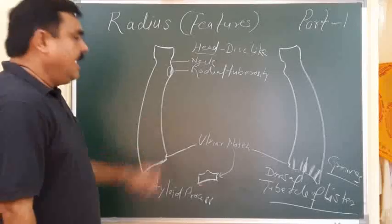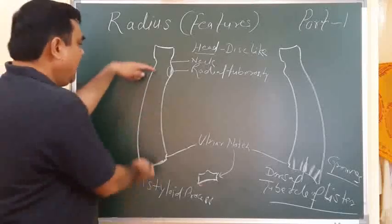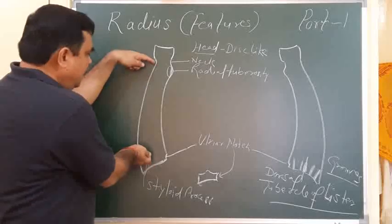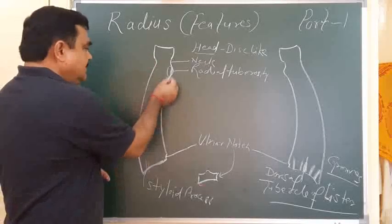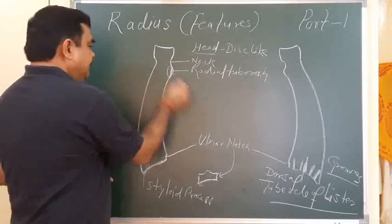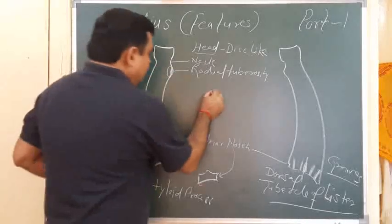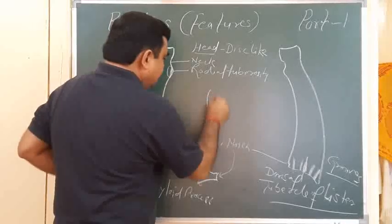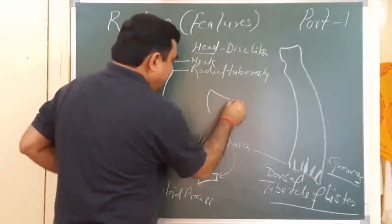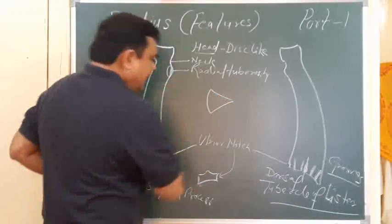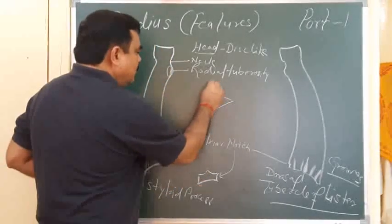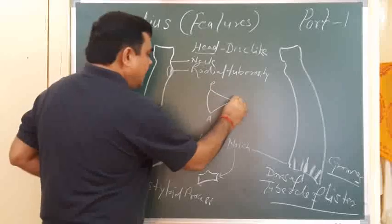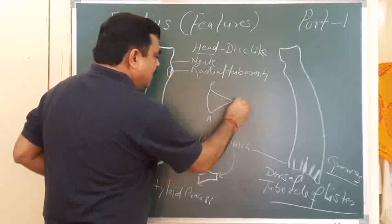So this is the lower end. The shaft, from here to here — if you put a cross-section through it, you will find it has an anterior border, a posterior border, and an interosseous border.